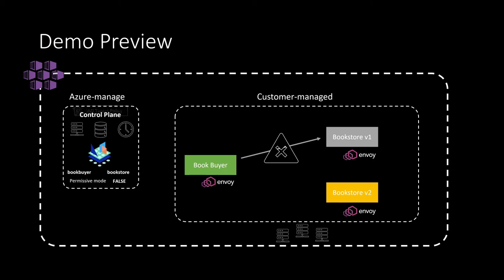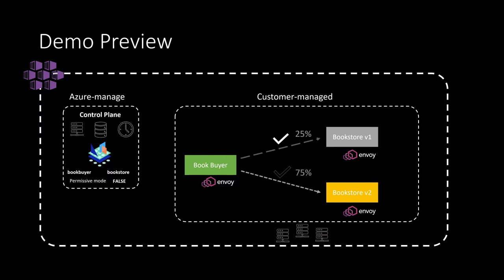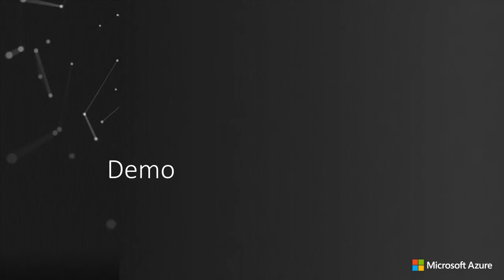We will deploy our SMI traffic target policies, which will instruct OSM to allow traffic from the Book Buyer service to resume communications to the Bookstore V1 service. Finally, we will deploy an SMI traffic split policy that will split and weight the amount of traffic from the Book Buyer to both the Bookstore V1 service and Bookstore V2 service.